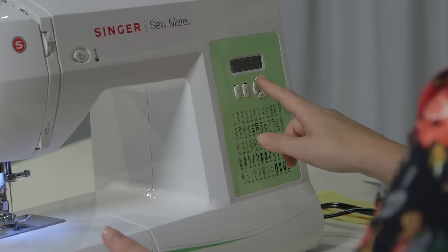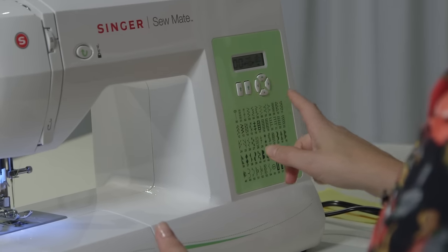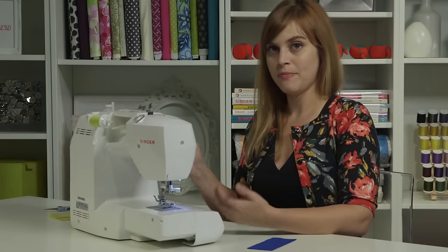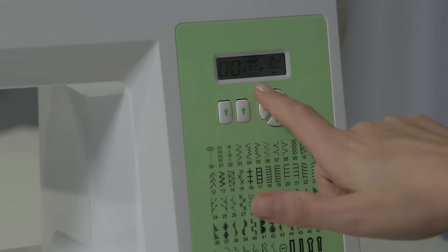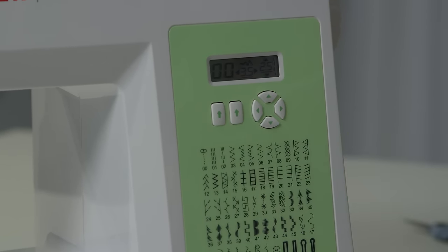If you do ever want to change them, you can use the up-down arrow to change the length and the left-right arrow to change the width. If you do change it and you want to go back to the default, you can just set it back until there's a line under the number. The line indicates that that's the default setting.